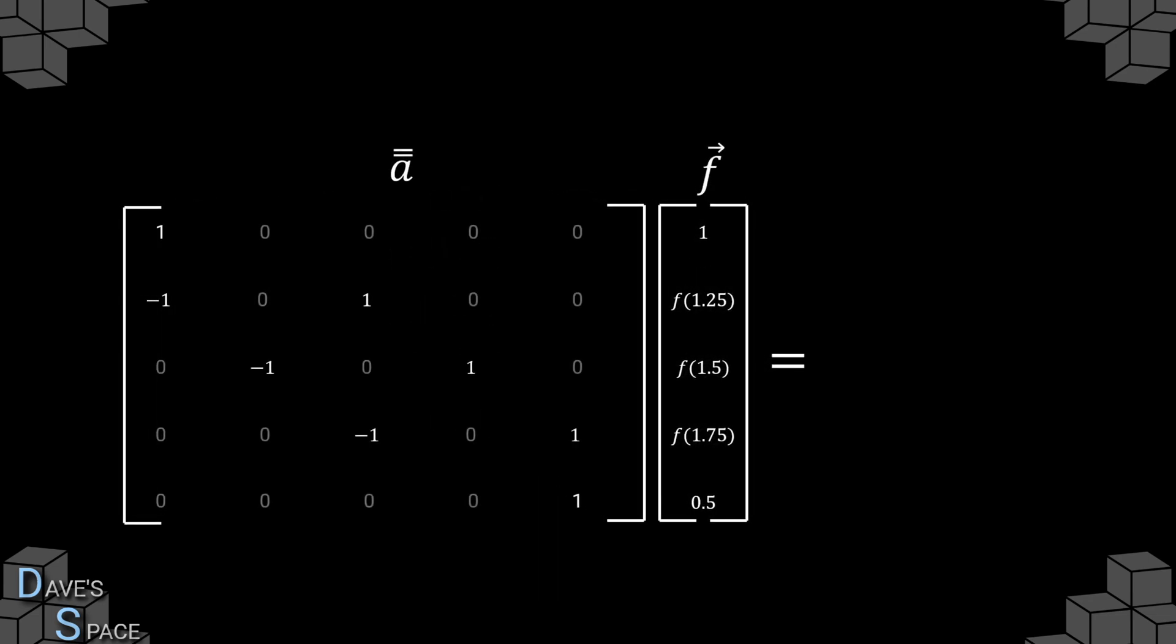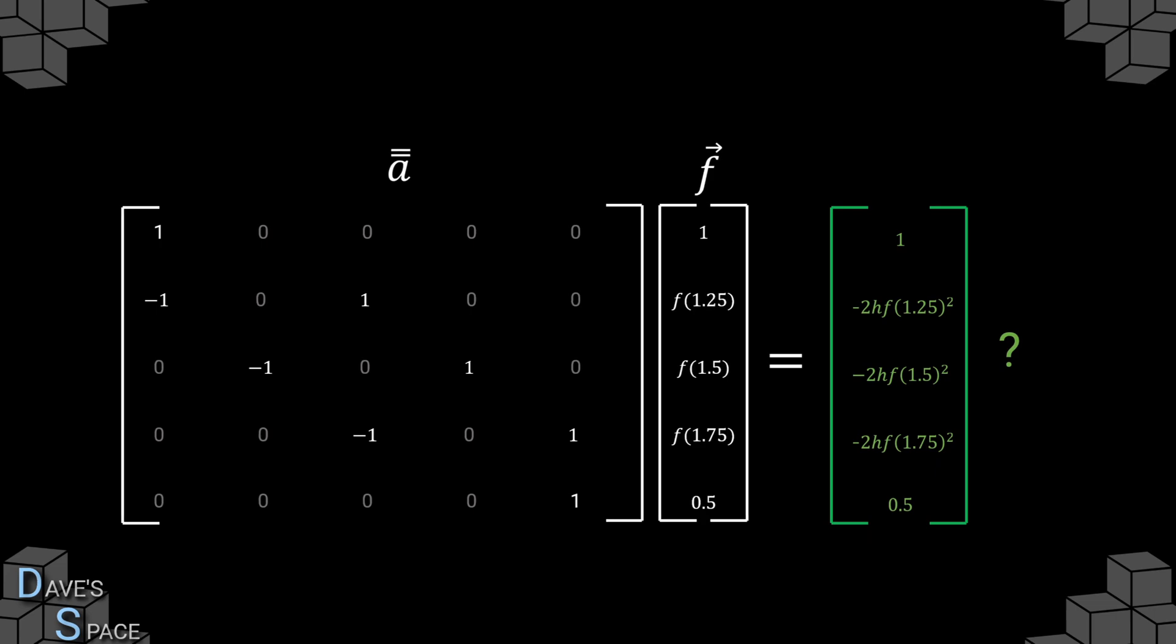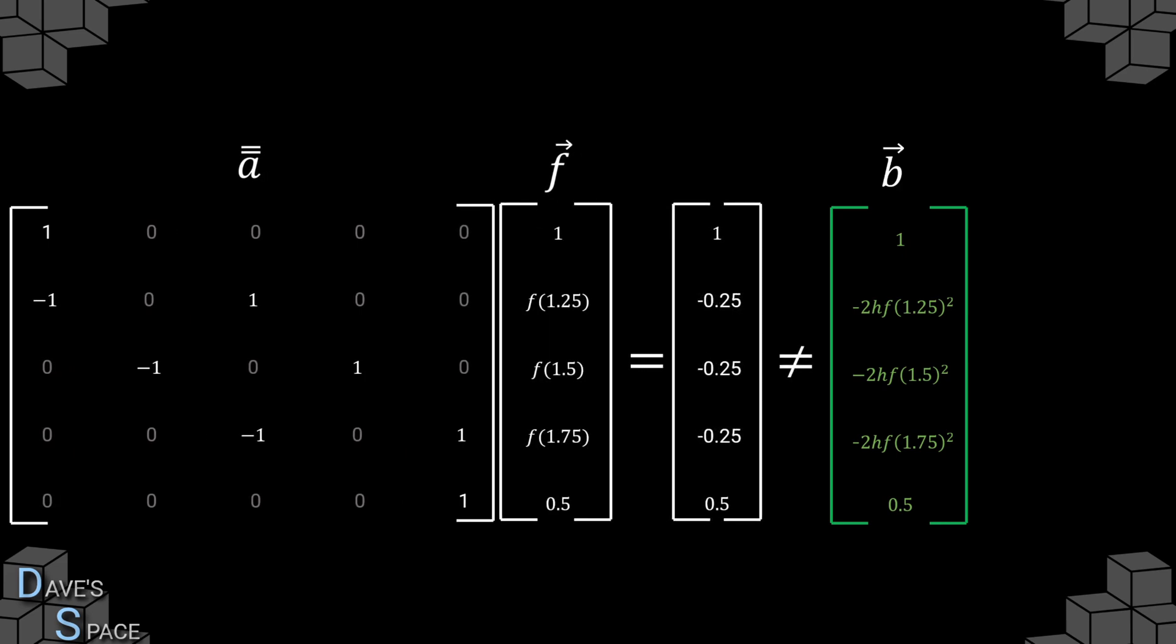So let's rearrange the equation slightly by multiplying by 2h to be left with this expression. Then go ahead and put that in our matrix format. And remember, if f is indeed the solution, then the matrix will turn the following, where af equals b. So what does it equal? Well, it turns out for our given linear input, this is not the solution, which is most unfortunate. a multiplied by f does not equal b. So what are we going to do?